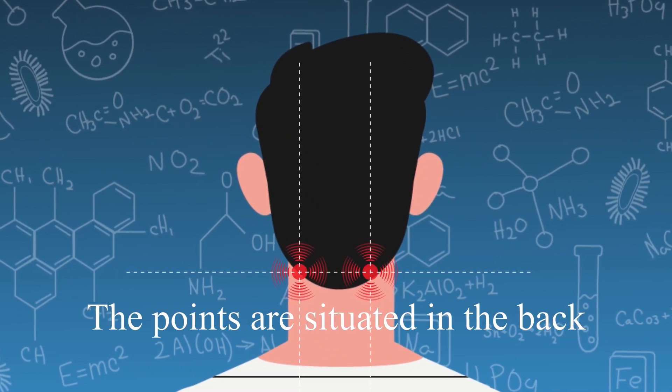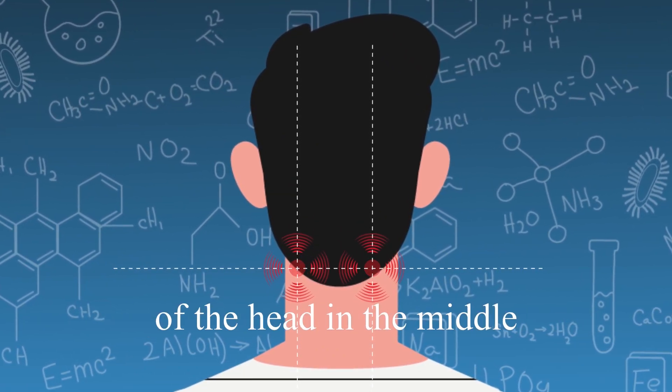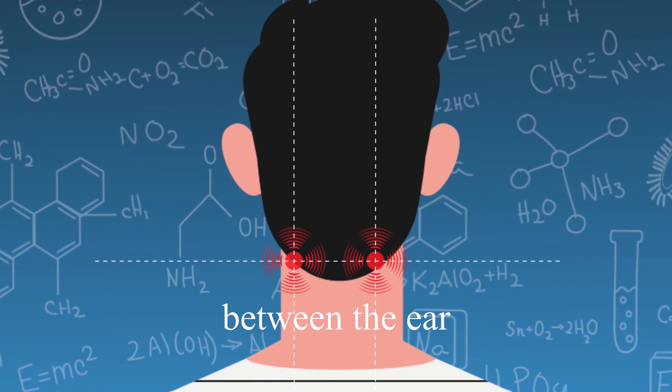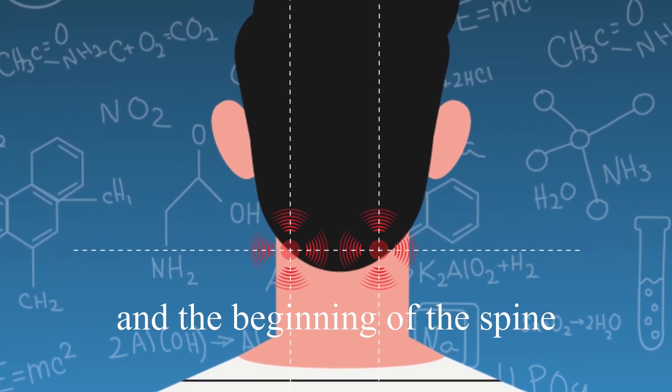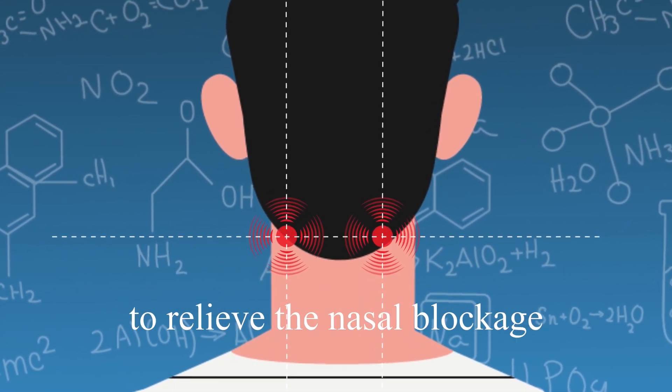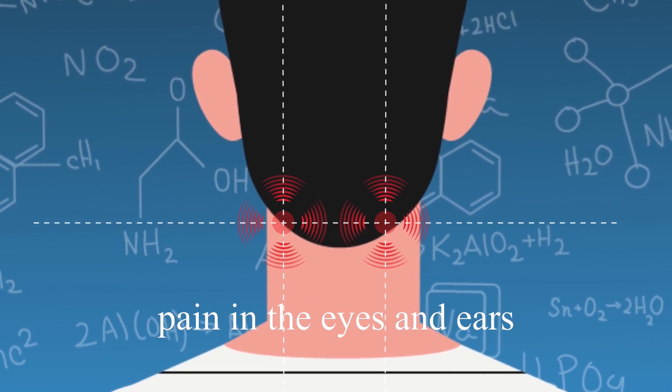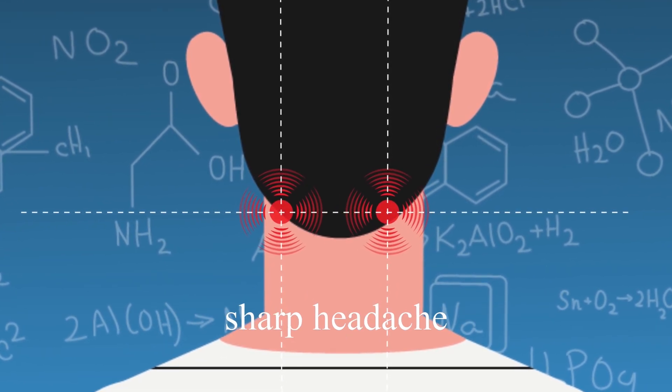Yen Jihan Point. The points are situated in the back of the head, in the middle, between the ear and the beginning of the spine. Massage of these points helps to relieve nasal blockage, pain in the eyes and ears, severe headache, and migraine.